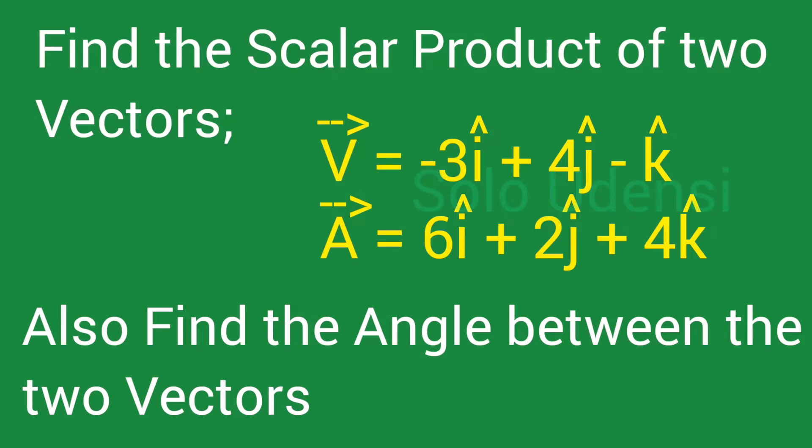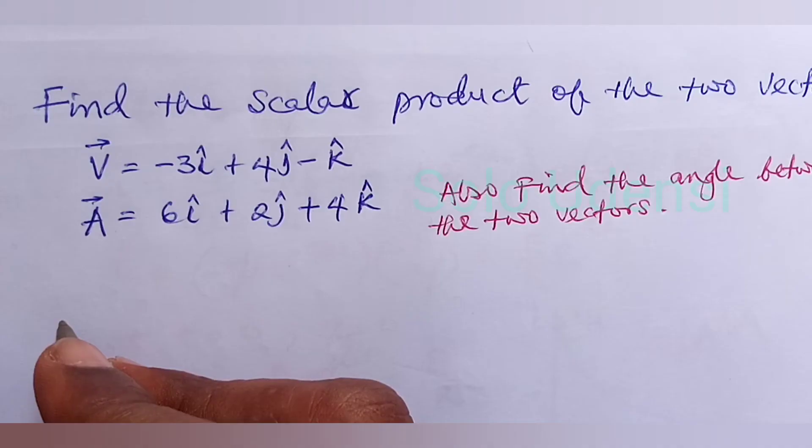Find the scalar product of two vectors. V is equal to minus 3 î plus 4 ĵ minus k̂. A is equal to 6 î plus 2 ĵ plus 4 k̂. Also, find the angle between the two vectors.